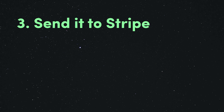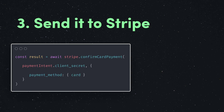When the form is submitted, you'll write a function that takes the payment intent from your server, combines it with the credit card details entered by the user in the browser, then call Stripe confirm card payment to send this data off to Stripe's servers.